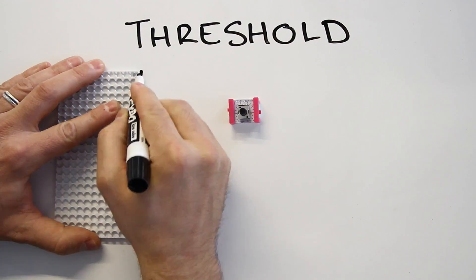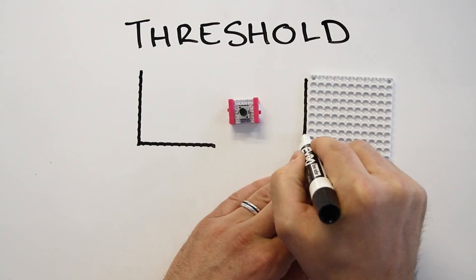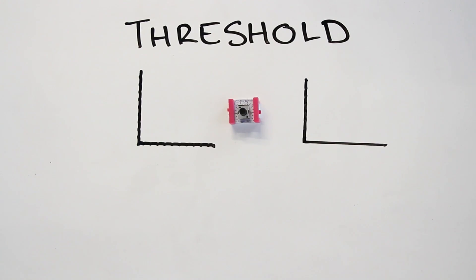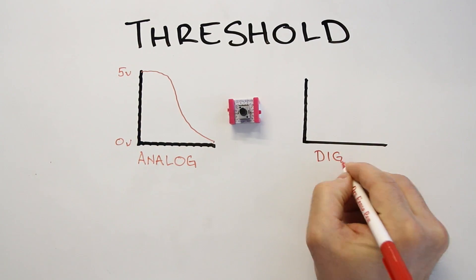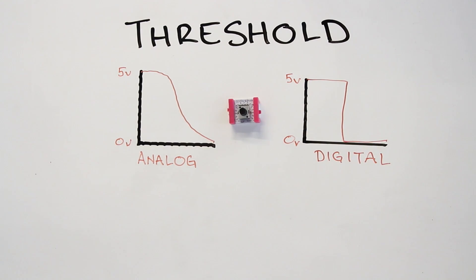The threshold module turns an incoming analog signal into an outgoing digital signal. An analog signal can lie anywhere between zero volts or five volts. A digital signal is only five volts or zero volts, but nothing in between.